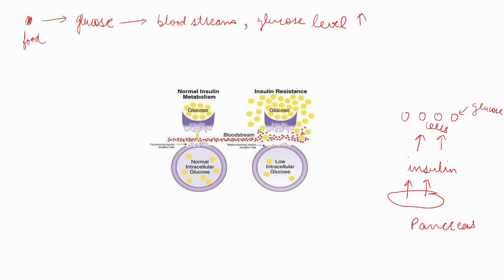In a non-diabetic person, normal levels of insulin are released after a meal to help restore blood glucose levels to normal, as the tissues respond by absorbing glucose and storing it in the form of glycogen. Whereas in an insulin-resistant person, the process breaks down and the body fails to use the secreted insulin effectively because the cells do not respond to the presence of insulin.